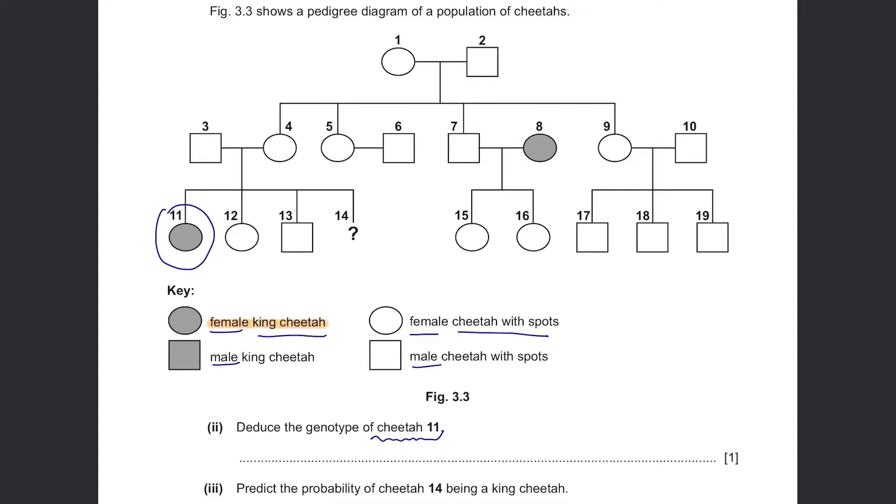Even though its parents are both cheetahs with spots, it's a king cheetah meaning that its parents are carriers of alleles of king cheetah. The alleles of king cheetah are recessive because it didn't show its traits in cheetahs 3 and 4. Let's choose letter C to represent an allele of a cheetah. In this case, it should be two small letters cc since it represents two recessive alleles of a king cheetah.